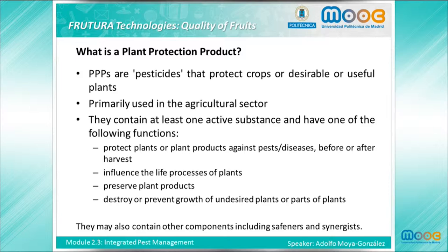They contain at least one active substance and have one of the following functions: to protect the plants or plant products against pests and diseases before or after harvest; to influence the life processes of plants; to preserve plant products; or to destroy or prevent growth of undesired plants or parts of plants. A plant protection product can also contain other components including safeners and synergists.